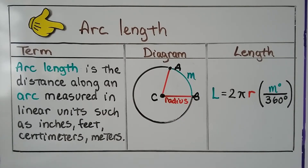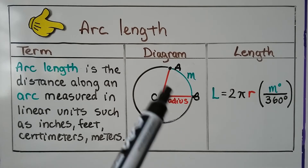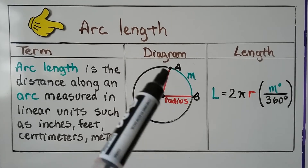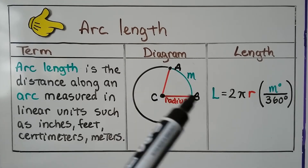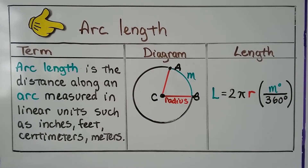So for your notes, arc length is the distance along an arc measured in linear units, such as inches, feet, centimeters, meters.